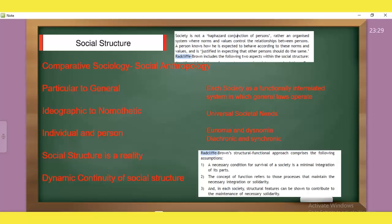But this is not a society that is a static entity. It's a dynamic entity. And the society that is an interrelated system operates on general law. Society is an observable reality, but it's not a dynamic continuity. And if we talk about comparative sociology, compare it to one another, then we get universal societal needs.